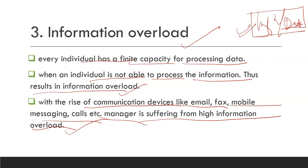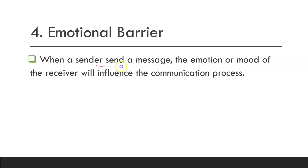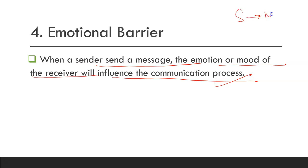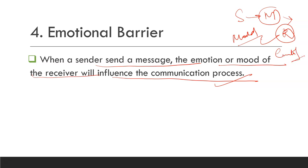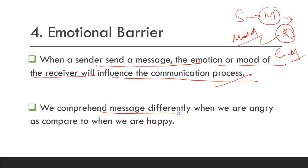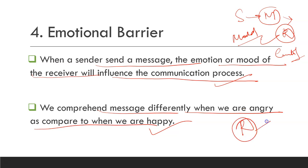Let's talk about emotional barrier. When a sender sends a message, the emotion or mood of the receiver will influence the communication process. Sometimes the sender has encoded and sent a message, but when it reaches the receiver, the receiver's mood or emotion at that temporary period influences the entire message. For example, we comprehend messages differently when we are angry as compared to when we are happy. When you receive a message and your mood is good and you are not angry, you comprehend the message differently. When your mood is not good, you comprehend it differently. So mood and emotion significantly influence the communication process and can act as an obstruction to properly decoding the sender's message.